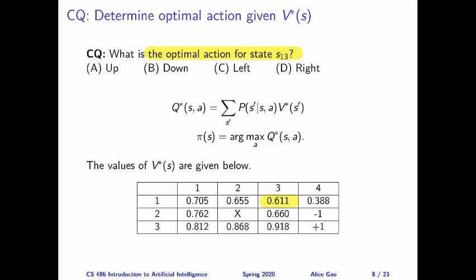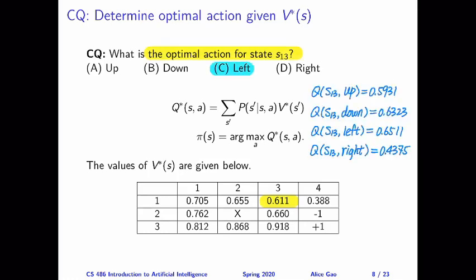I'm going to give you the answer in this video, and then I will make a separate short video to explain the calculation process. The correct answer is LEFT. LEFT is the best action, and we can simply calculate the Q value for all four actions. And it turns out LEFT achieves the highest Q value right here.